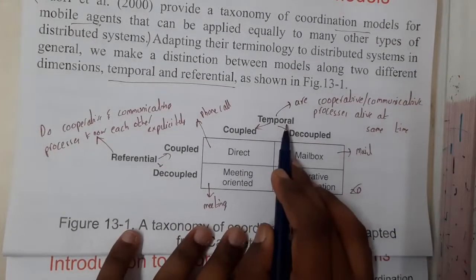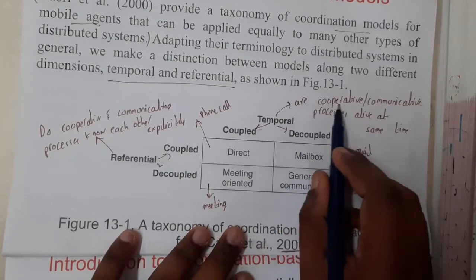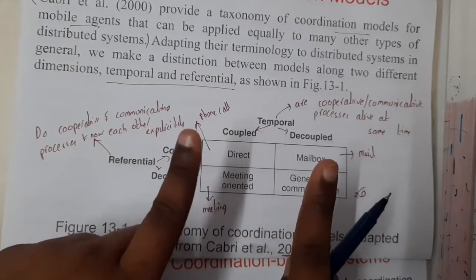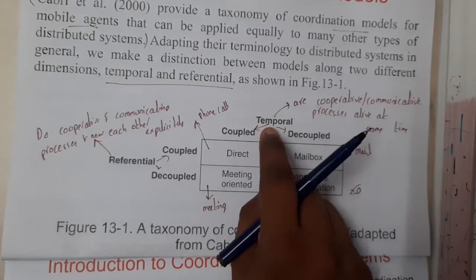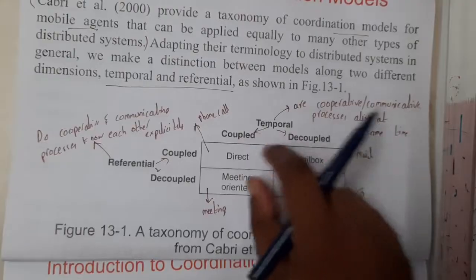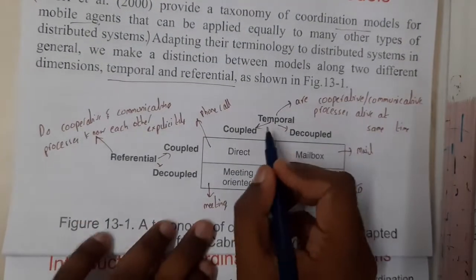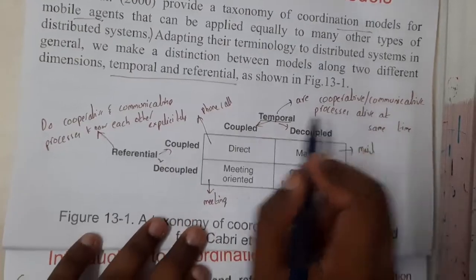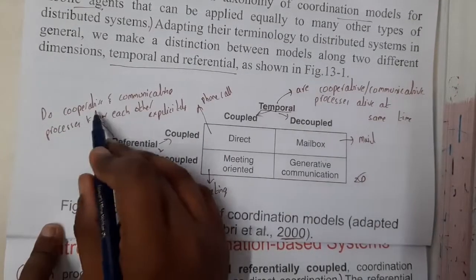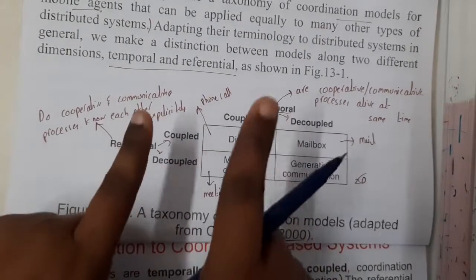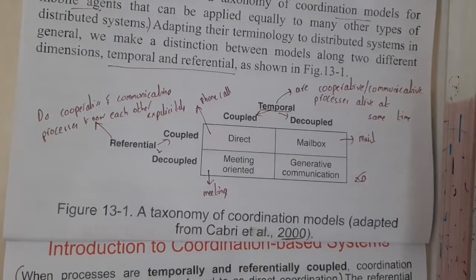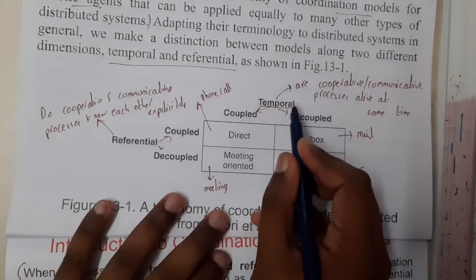Your first question will be: what is temporal and what is referential? Temporal means: are the cooperative or communicative processes alive at the same time? If both processes are running parallelly, they are temporally coupled. Referential means: do the cooperative and communicative processes know each other? That is the key question.